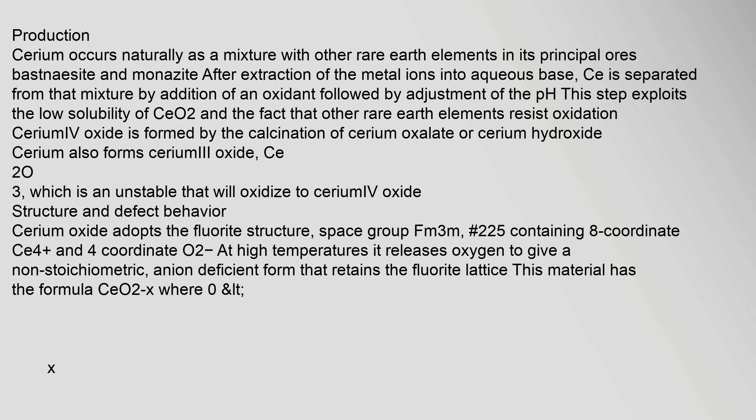which is an unstable that will oxidize to cerium(IV) oxide. Structure and defect behavior: Cerium oxide adopts the fluorite structure, space group Fm3m, number 225, containing 8-coordinate Ce4+ and 4-coordinate O2-. At high temperatures it releases oxygen to give a non-stoichiometric, anion deficient form that retains the fluorite lattice. This material has the formula CeO2-x where 0 < x < 0.5.